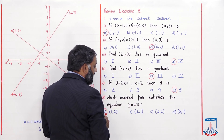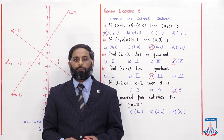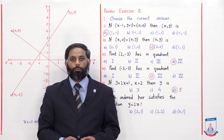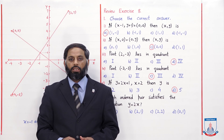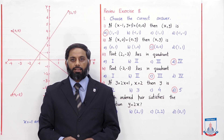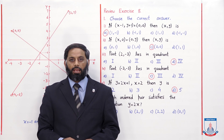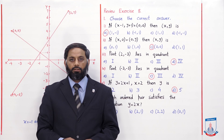अगर none की option होती तो तमाम ordered pairs equation में put करके check करते। चूंकि यहाँ none की option नहीं है, option A check किया और equation satisfy हो गई, लहाज़ा option A correct है। आज के lecture में exercise 8.3 और review exercise 8 के MCQs समझे। Exercise 8.3 के remaining questions इसी method से होंगे — वो as homework खुद solve करें। Next lecture में next chapter शुरू करेंगे। اللہ حافظ۔